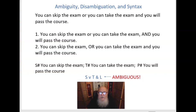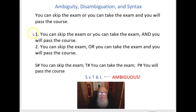Consider the following statement: 'You can skip the exam, or you can take the exam and you will pass the course.' Now this sentence all by itself is ambiguous. It could mean two different things depending on how you interpret it. First, it could mean you can skip the exam, or you can take the exam and you will pass the course. Or two, it could mean you can skip the exam, or you can take the exam, and you will pass the course.